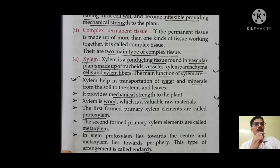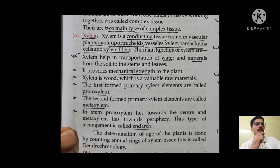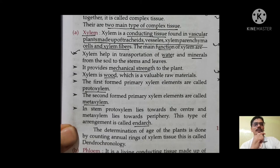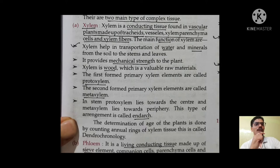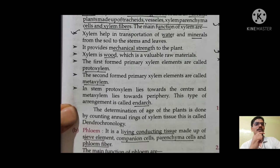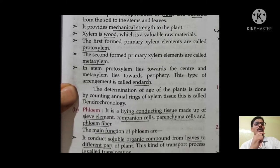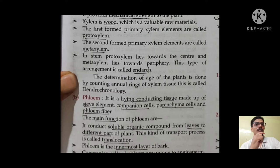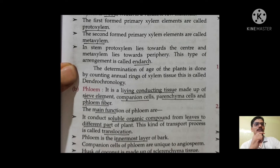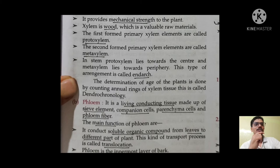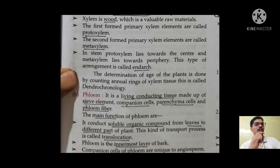Next is complex permanent tissue. Complex permanent tissues are two main types — xylem and phloem — very important. If exam questions come on xylem and phloem, be very attentive. Xylem is a conductive tissue found in vascular plants, made up of tracheids, vessels, xylem parenchyma cells, and xylem fibers. Its main function is transportation of water and minerals and providing mechanical strength to the plant. Xylem is wood and provides valuable raw materials. The first-formed primary xylem elements are called proto xylem, and the second-formed are meta xylem. In stem, proto xylem lies towards the center and meta xylem lies towards the periphery — this arrangement is called end arch.